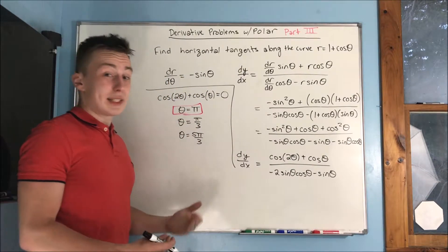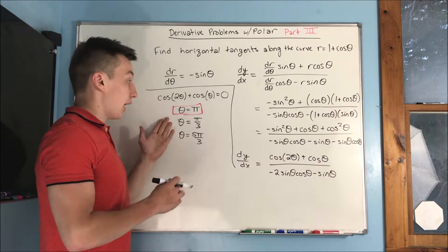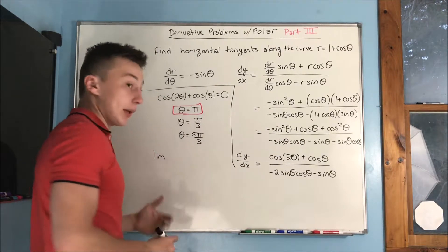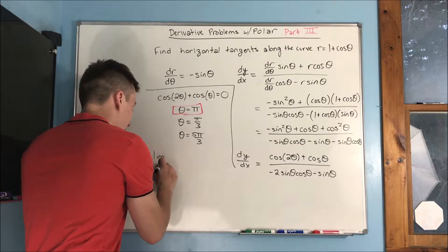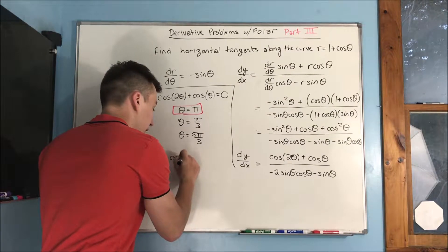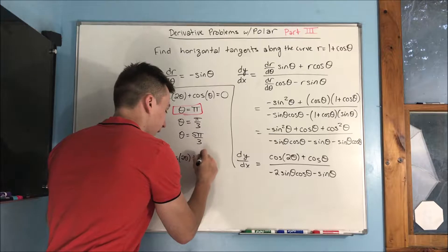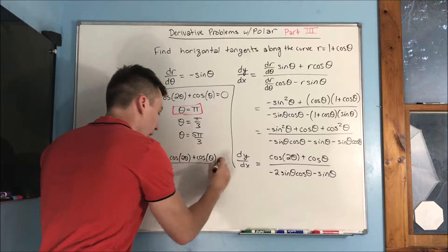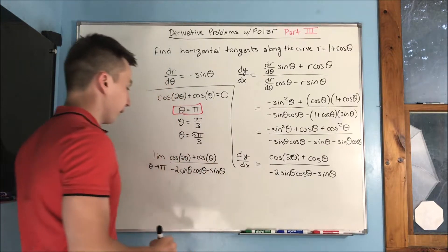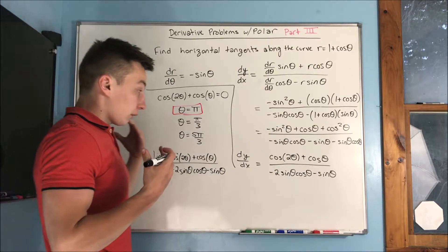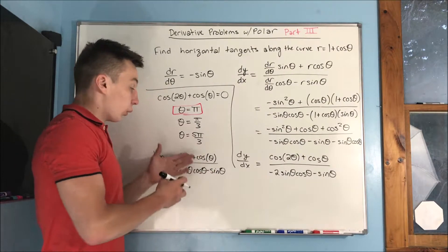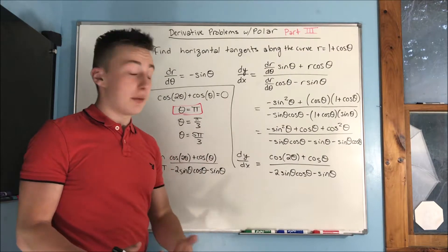For pi over three and five pi over three, you can see those won't make the denominator zero. For theta equals pi, since we get zero over zero, we use L'Hôpital's rule. We take the limit as theta approaches pi of the whole dy/dx expression — cosine of two theta plus cosine theta, all over negative two sine theta cosine theta minus sine theta.